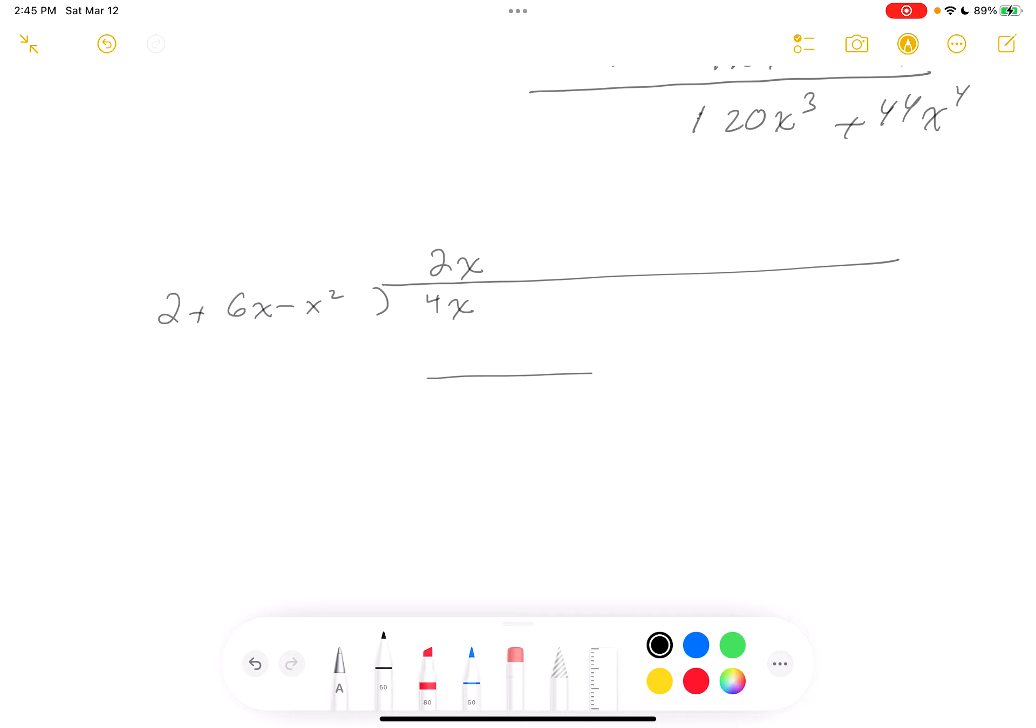You're going to multiply it through, and what do you get there? 4X plus 12X squared minus 2X cubed. You're going to subtract. So what do you get? Minus 12X squared plus 2X cubed.